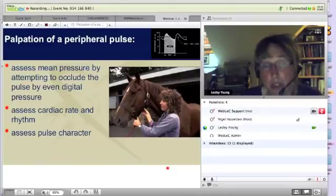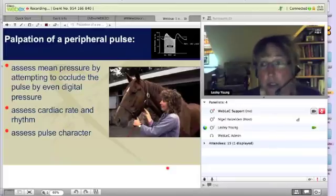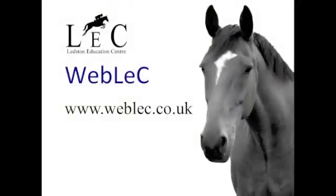The problem with aortic valve regurgitation is that if you imagine from a pathophysiological point of view what's happening, the aorta is always at high pressure because that's what makes sure the horse perfuses all its tissues during diastole. When the valve leaks really badly, all of that blood hurtles back into the left ventricle.